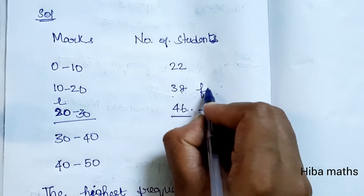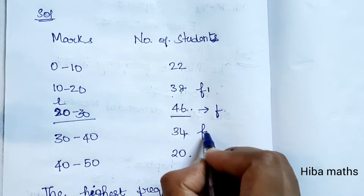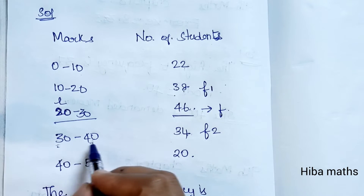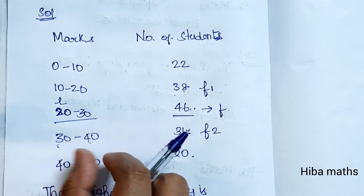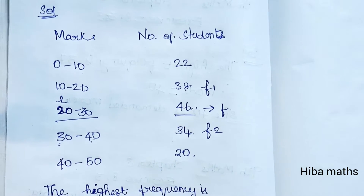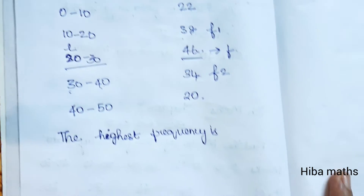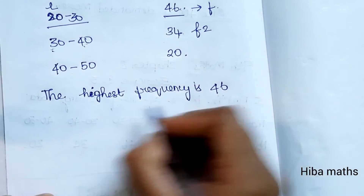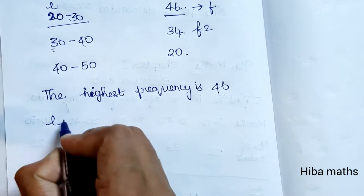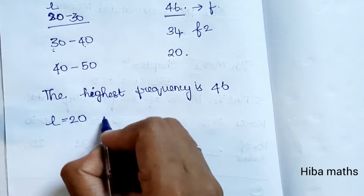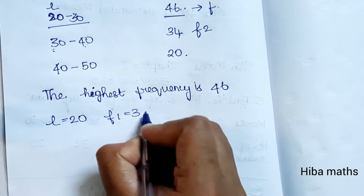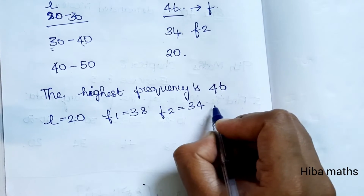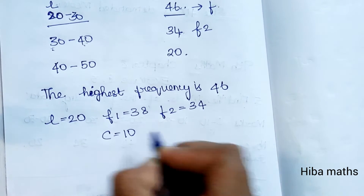F is the highest frequency, which is 46. F1 is the frequency preceding the modal class, which is 38. F2 is the frequency following the modal class, which is 34. And C is equal to 10.